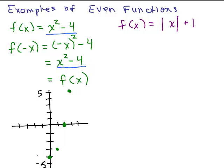Here's the cool thing about an even function: every point on the right side of the Y-axis has a corresponding point on the left side — you go straight across the same distance. If you plug in 1, you get the same Y value as if you plug in -1. The graph is completely symmetric across the Y-axis. Note that's not true of all parabolas — if the vertex is not on the Y-axis, it would not be symmetric across it.